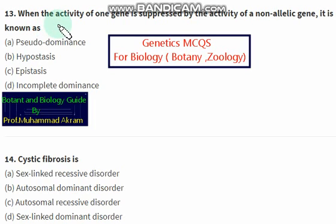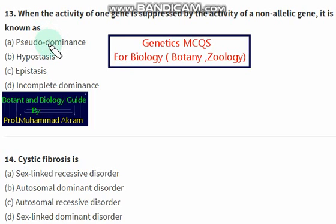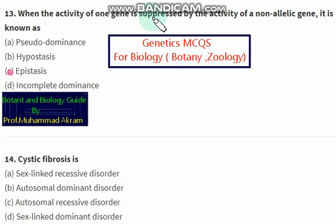When the activity of one gene is suppressed by the activity of a non-allelic gene, it is known as — pseudo dominance or epistasis? The right answer is epistasis. When the activity of one gene is suppressed by the activity of a non-allelic gene, it is known as epistasis.